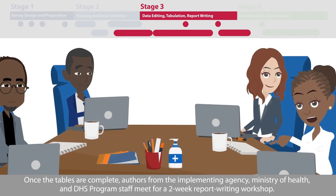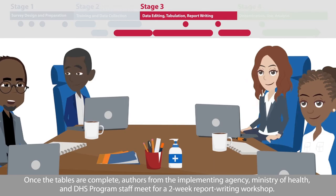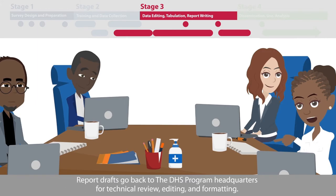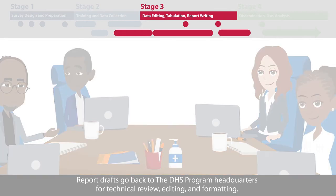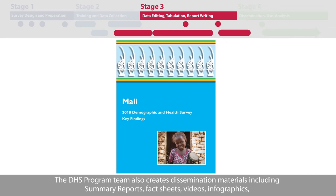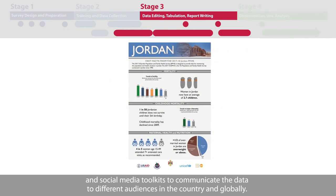Once the tables are complete, authors from the implementing agency, Ministry of Health, and DHS program staff meet for a two-week report writing workshop. Report drafts go back to the DHS program headquarters for technical review, editing, and formatting. The DHS program team also creates dissemination materials including summary reports, fact sheets, videos, infographics, and social media toolkits to communicate the data to different audiences in the country and globally.